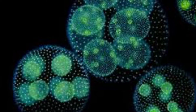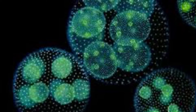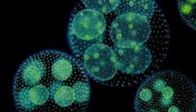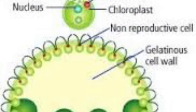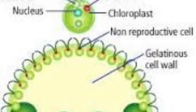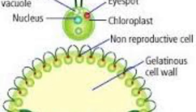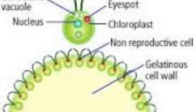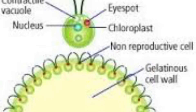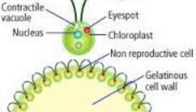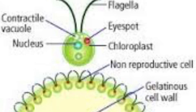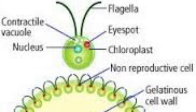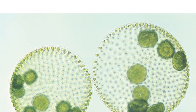Our microorganism is a volvox. They are unicellular microbes, or tiny organisms with only one cell. Volvox are one-celled algae called ciliates that live together in a colony. This colony is a hollow ball with 500 to 20,000 individual cells.